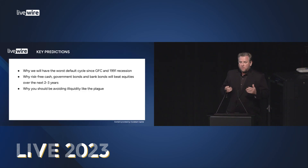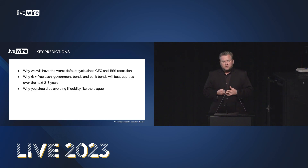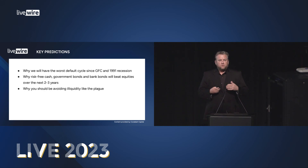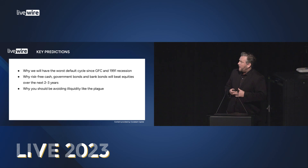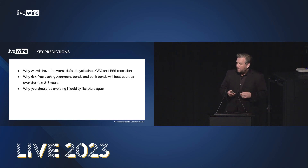Today I'm going to give you three key messages. The first is why we think we're going to have the worst default cycle here in Australia since 1991, and in the US since the GFC. The second key prediction is that a simple old risk-free cash, risk-free government bonds, and near risk-free bank bonds are going to outperform equities over the next few years. And finally, we recommend avoiding illiquid assets like the plague.